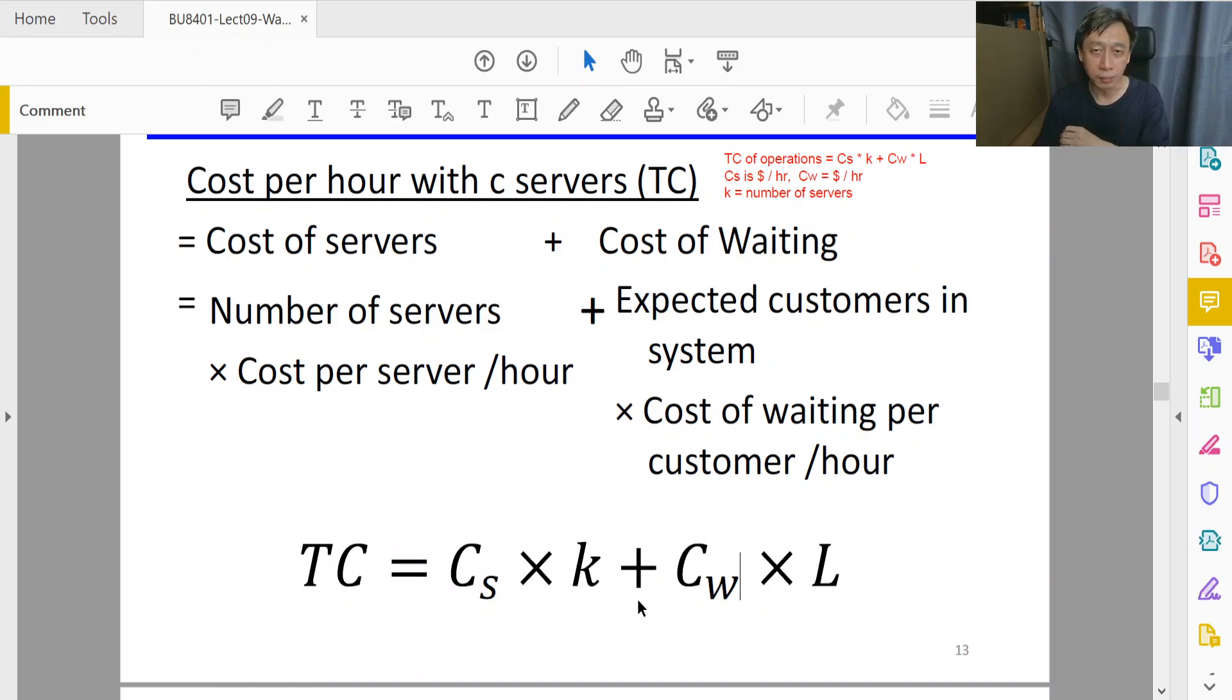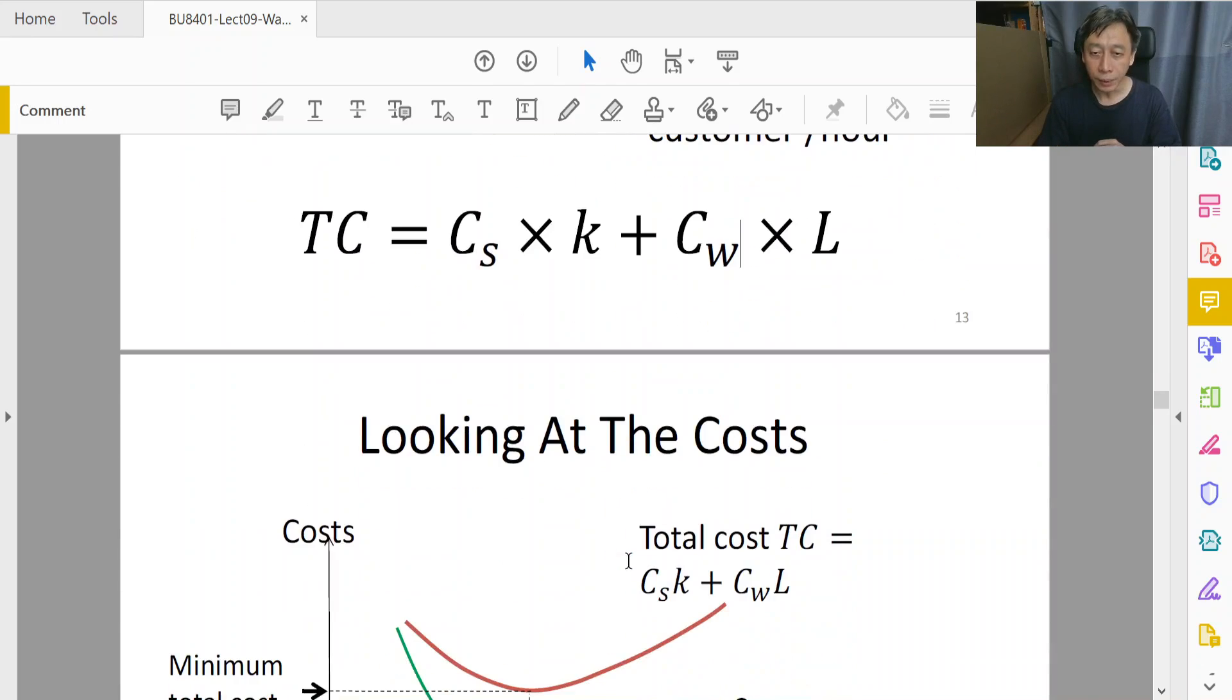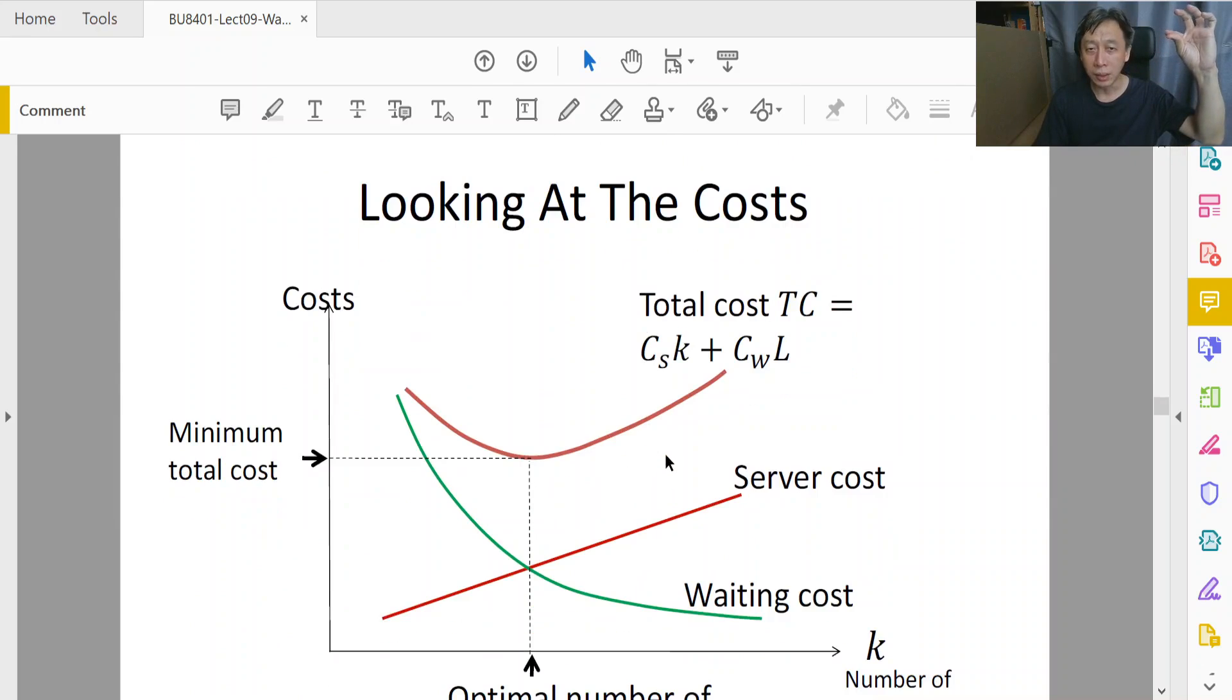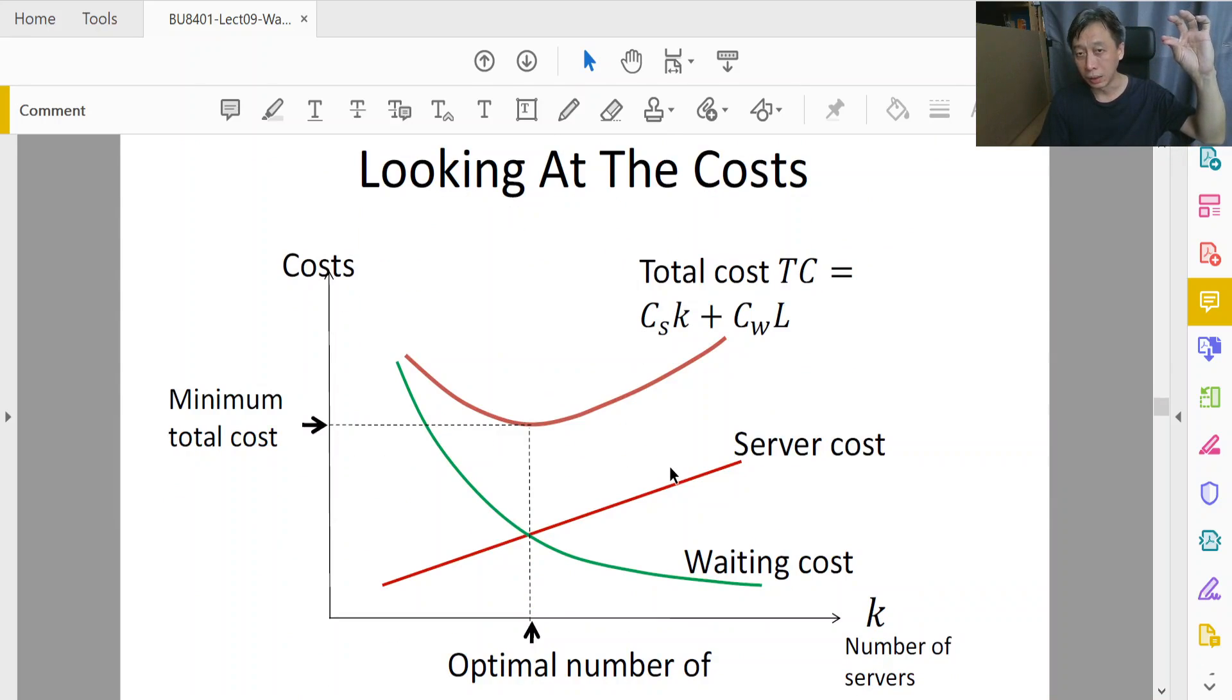So the idea is, I talked about earlier on, how initially when k is small, the cost is very high because we only have one server and a lot of customers will be queuing up or else being served by our slow server. And they will all be unhappy and they will be badmouthing the bank, and so the indirect cost will be high and so on. So high TC. As we increase the cost - the number of servers k on the x-axis goes larger and larger, one, two, three increases.